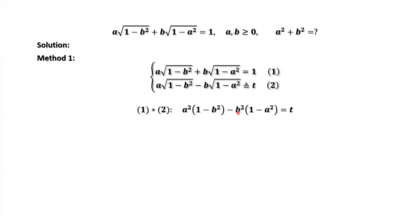We multiply the first equation by the second equation on both sides — left-hand side times left-hand side, right-hand side times right-hand side. Then we have a squared times (1 minus b squared) minus b squared times (1 minus a squared), which equals 1 times t, so that equals t. The formula we used here is the difference of squares: (x plus y)(x minus y) equals x squared minus y squared.